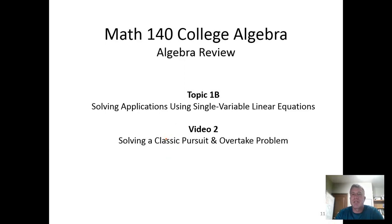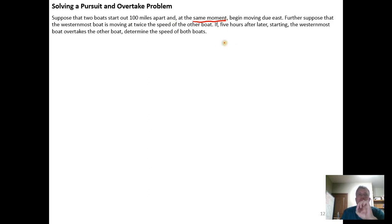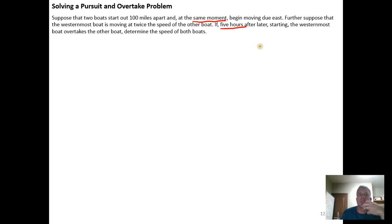In this video we're going to use a single variable equation to solve a classic pursuit and overtake problem. First, read through the problem one full time before doing anything. Suppose that two boats start out 100 miles apart and at the same moment begin moving due east. The westernmost boat is moving twice the speed of the other boat, and five hours later the westernmost boat overtakes the other. Determine the speed of the two boats.